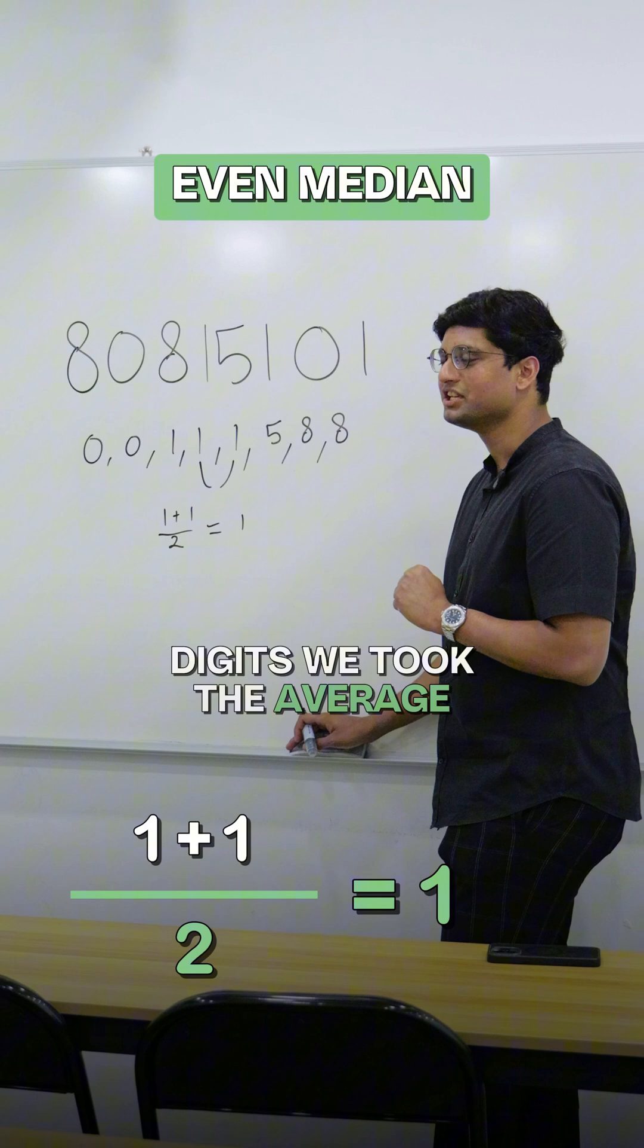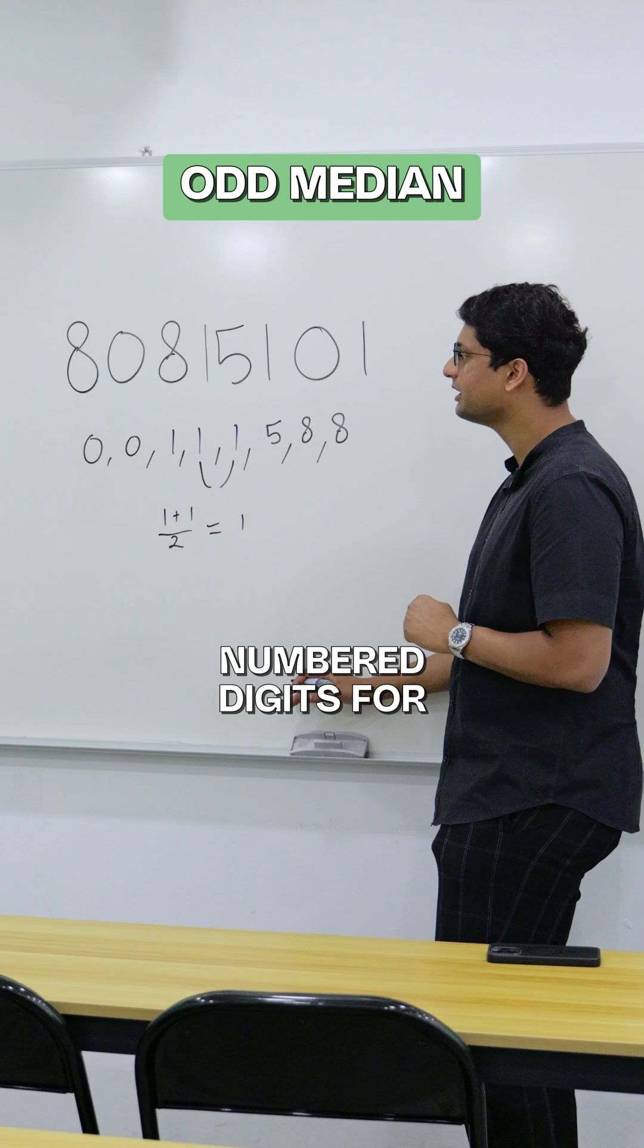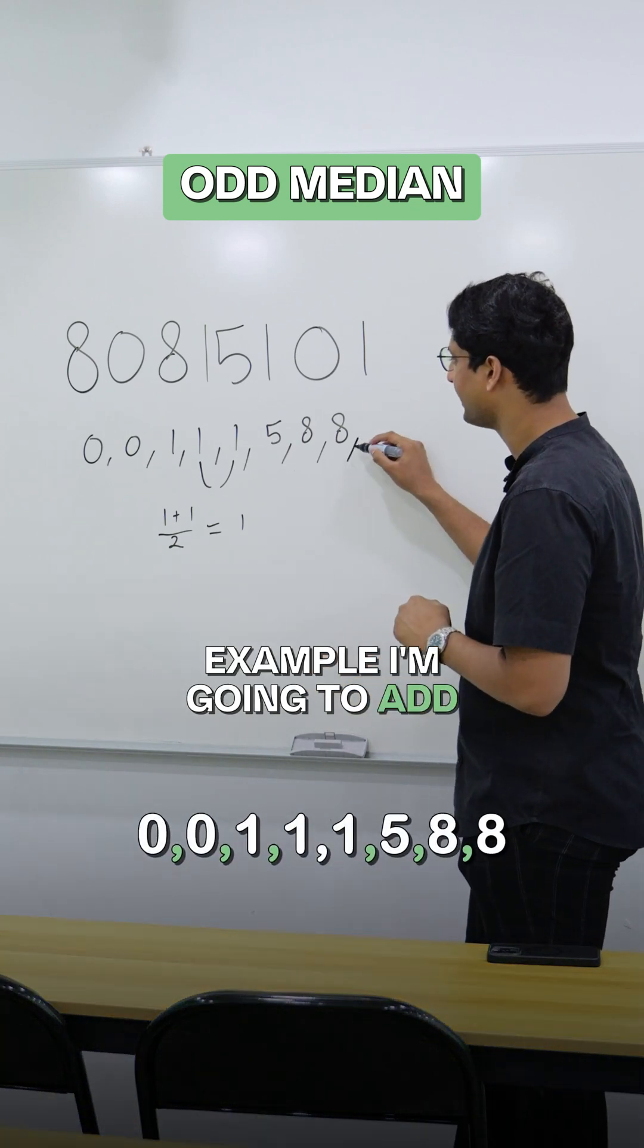So for even numbered digits, we took the average of the middle two values. However, if we have odd numbered digits, for example, I'm going to add another number.